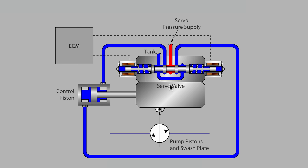A servo mechanism is basically any self-correcting control. The system needs to correct any time the operator requests from the pump a different output than what is currently being delivered.